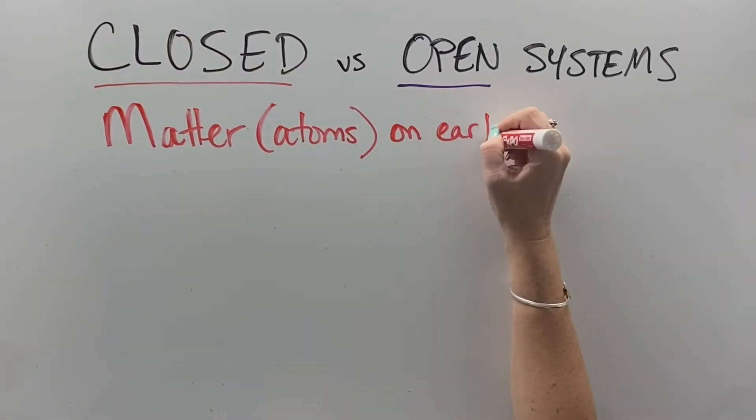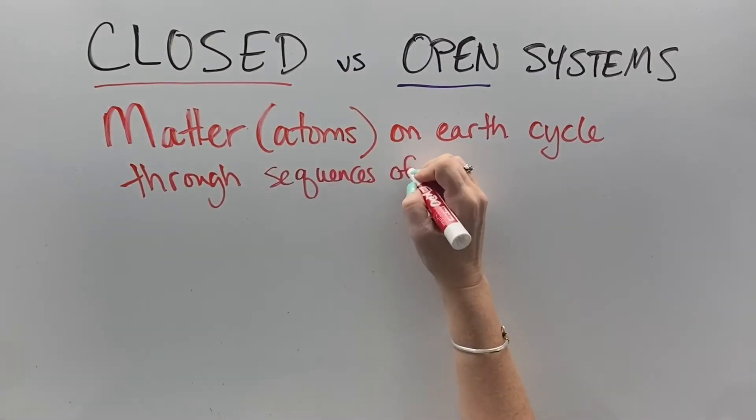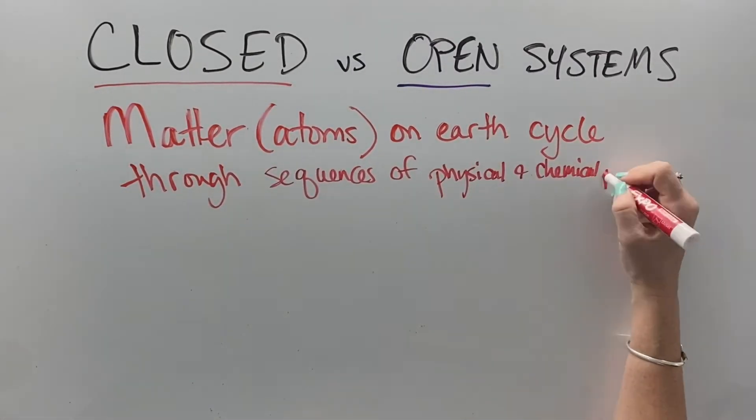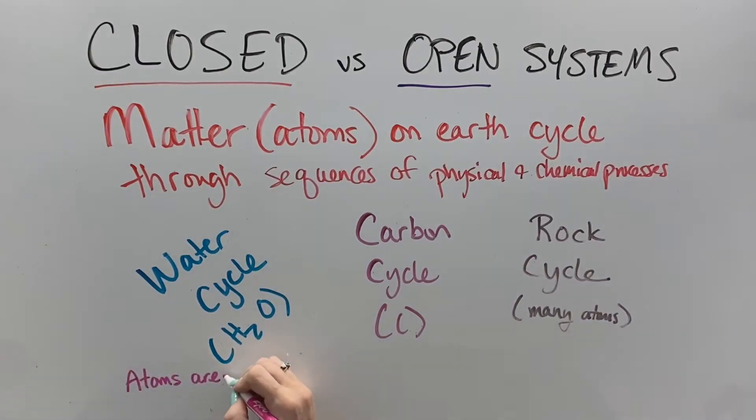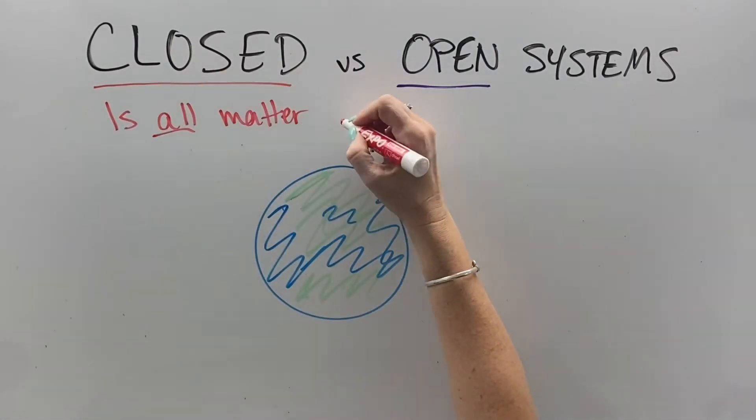So the key here is that all the matter, the atoms on earth, cycle through these types of processes. There's nitrogen cycles and oxygen cycles. Water, carbon, and rock cycles are great examples that we don't add atoms, we don't remove atoms, we don't create or destroy. They just cycle.